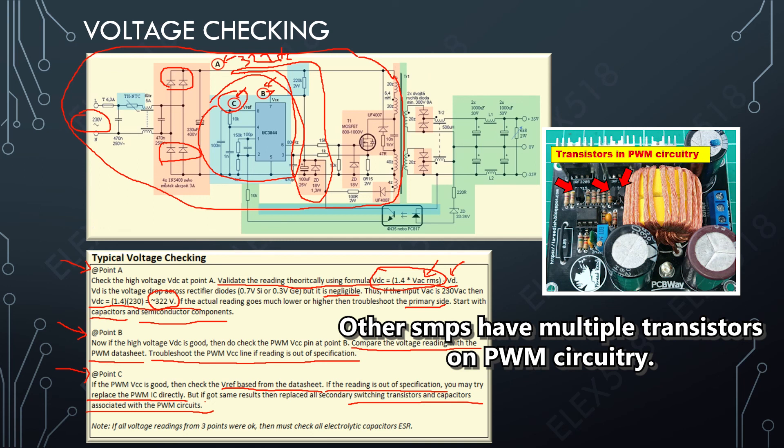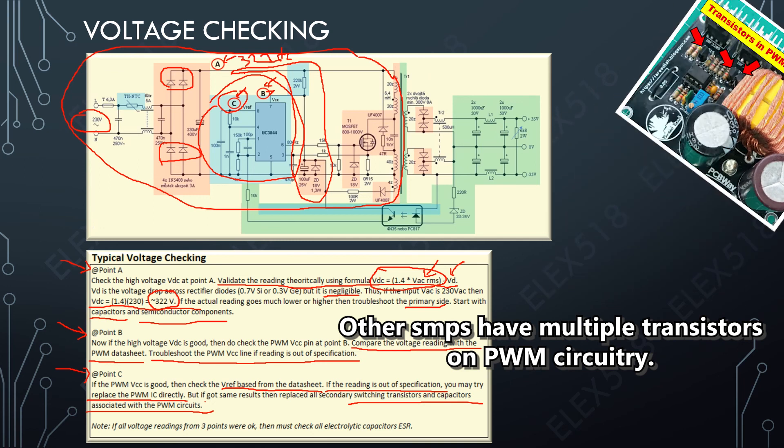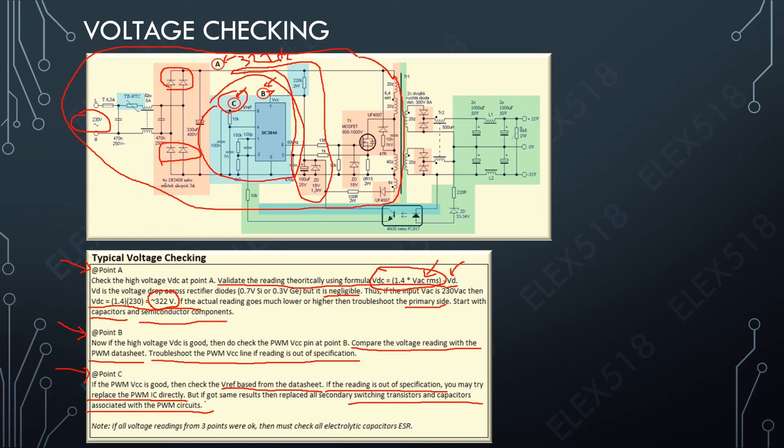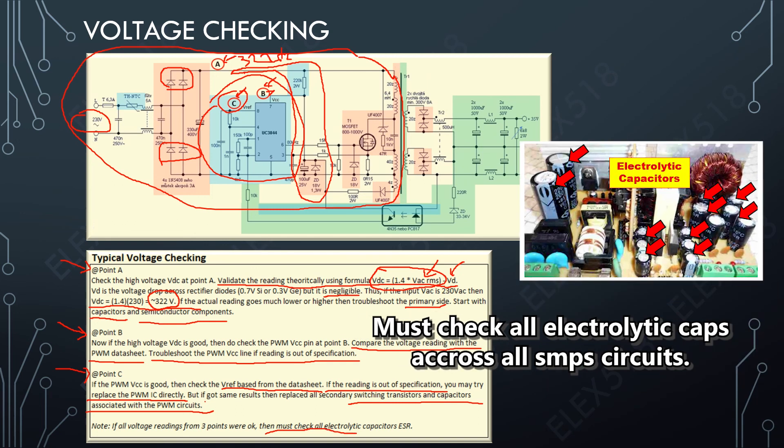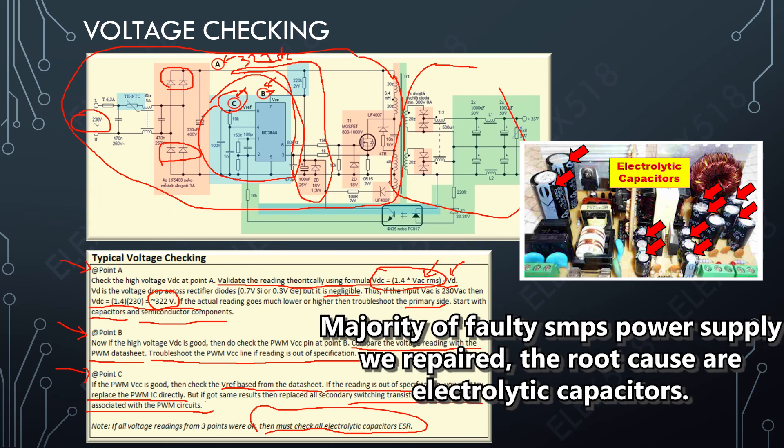Let's say all the voltage readings from three points were okay. What do I want to do next? I must check all the electrolytic capacitors from the circuit, including the primary and secondary side, because most of our experience shows that the power supply problem is caused by electrolytic capacitors.